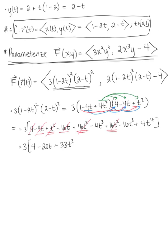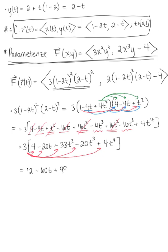Moving on to the cubics, we have minus 4t cubed minus 16t cubed, giving minus 20t cubed, plus 4t to the fourth. Distributing 3 through to each piece, the first component simplifies to 12 minus 60t plus 99t squared minus 60t cubed plus 12t to the fourth. This is just the first component of our parametrized vector field.